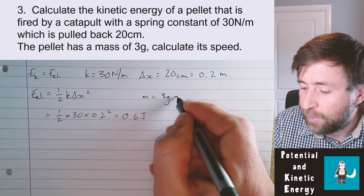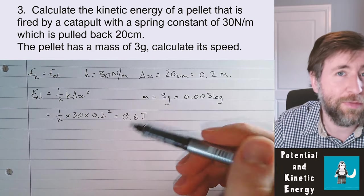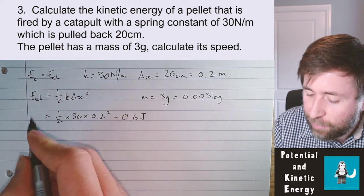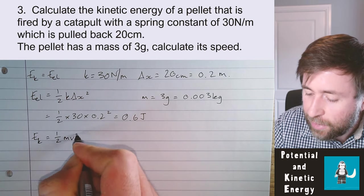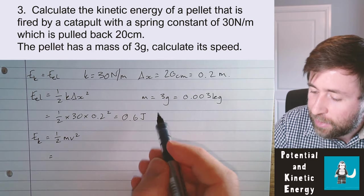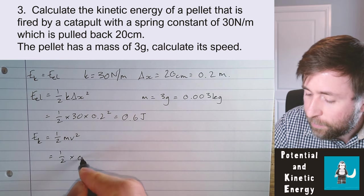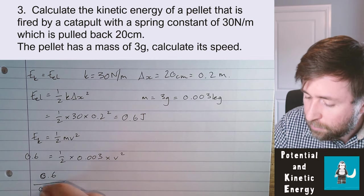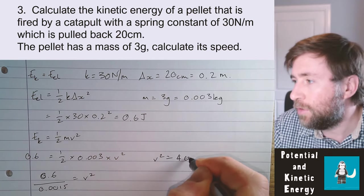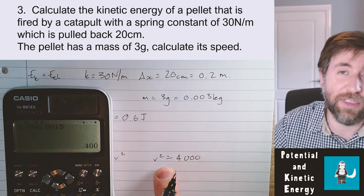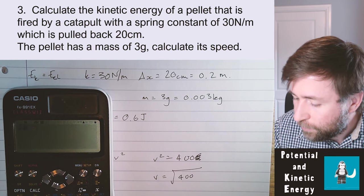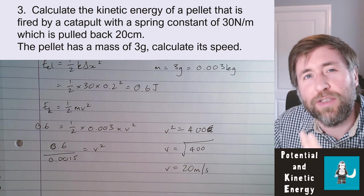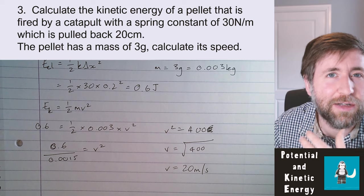The pellet mass of 3 grams must be converted to 0.003 kilograms. Now use KE = one-half × m × v²: 0.6 = one-half × 0.003 × v², so v² = 400, and v = √400 = 20 meters per second. That's about 40 miles per hour — a reasonable speed for a pellet.